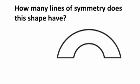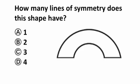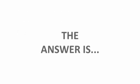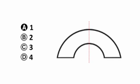How many lines of symmetry does this shape have? As you can see, the shape only has one line of symmetry. So the answer is A.